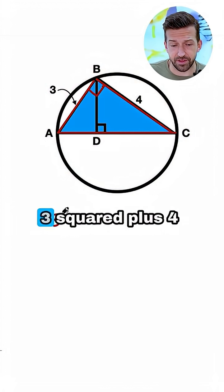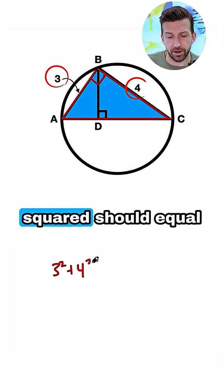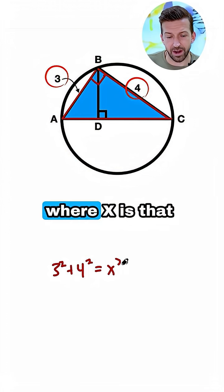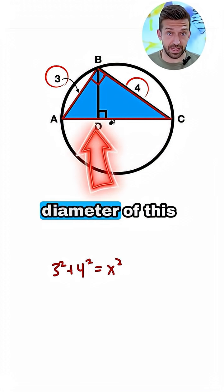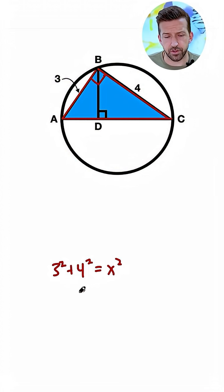So we could say that 3 squared plus 4 squared should equal x squared, where x is that hypotenuse, or the diameter of this circle. 3 squared plus 4 squared is 25, so 25 equals x squared. That makes x, that side length, 5.